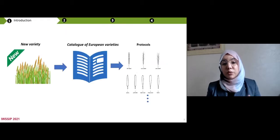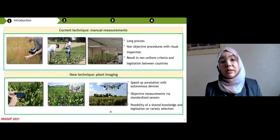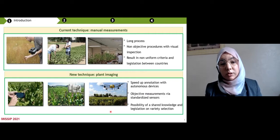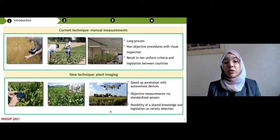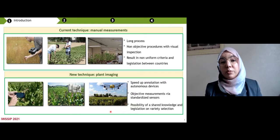In agriculture, when a new variety asked to be registered in European catalog, it passed several tests. So how to apply this protocol? The current technique to implement this test is a manual measurement. So it's a very long process. Plus, there are no objective procedures with visual inspection.